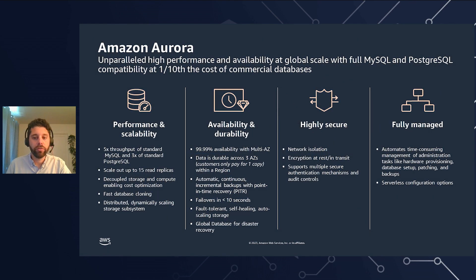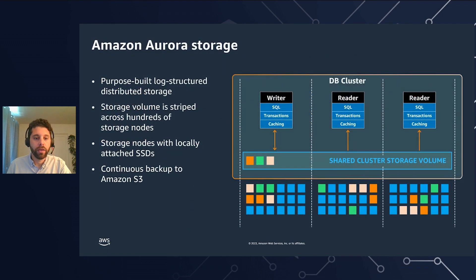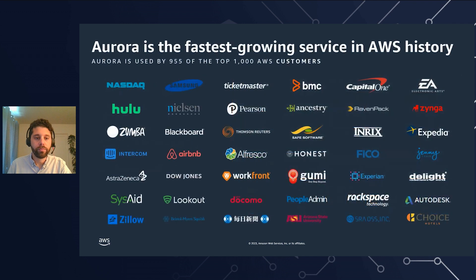Amazon Aurora is a relational database service that combines the speed of high-end commercial databases with the simplicity and cost effectiveness of open source databases. It offers performance and scalability, availability and durability, and is highly secure and fully managed. The separation of compute and storage in Aurora is a key innovation — we've built purpose-built storage to enable many database activities to be pushed down to the storage layer, freeing up compute resources to handle database operations. Aurora is the fastest growing service in AWS history.